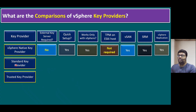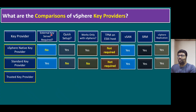The second option is Standard Key Provider, meaning a remote key management server. External key server required? Yes — for Standard Key Provider we definitely need a KMS server. Quick setup? No — if the KMS server is a physical appliance, there is installation work, cabling, and rack setup involved, so it's not a quick setup. Works only with vSphere? No — this Standard Key Provider can also be used for other physical servers and third-party hypervisors. TPM required? No — we can configure it without TPM. VMware product support: vSAN, SRM, and vSphere Replication are all supported.